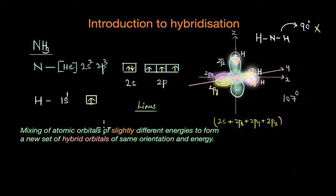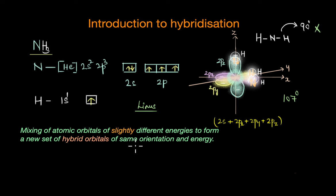Hybridization is basically the mixing of atomic orbitals of slightly different energies to form a new set of hybrid orbitals that are of the same orientation and energy. The atomic orbitals should be only slightly differing in energy — you cannot have a 2s orbital mixing with a 3p or 3d orbital where there is a substantial difference in their energies. The atomic orbitals that mix should be slightly different in energy, and then we get a new set of hybrid orbitals which are of the same orientation and energy.